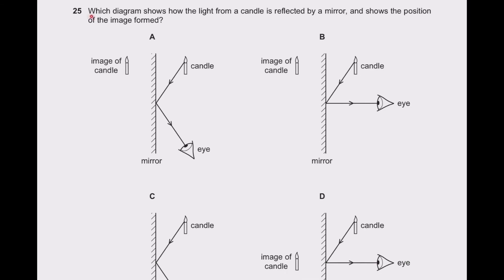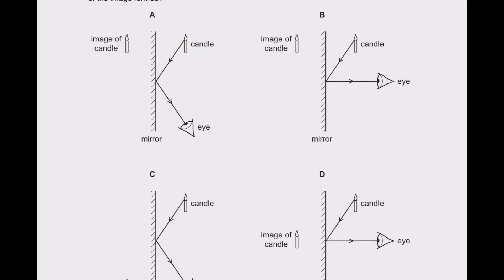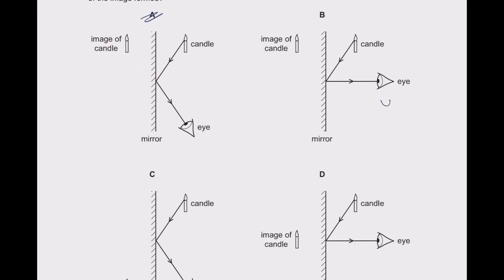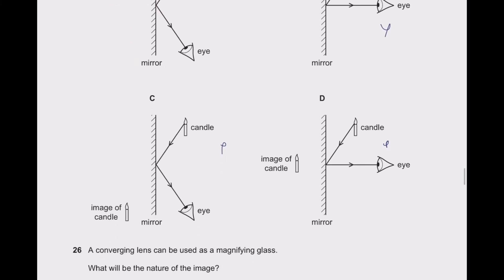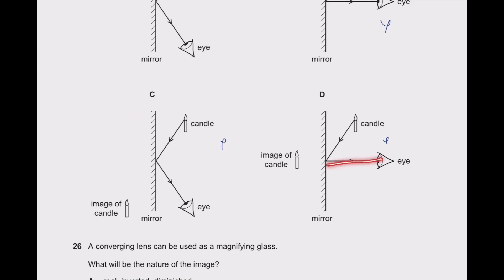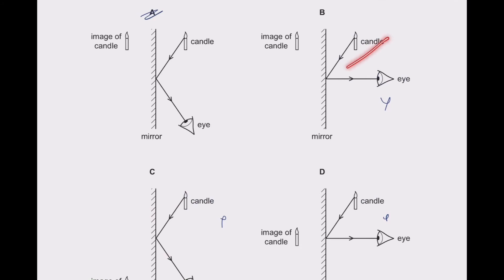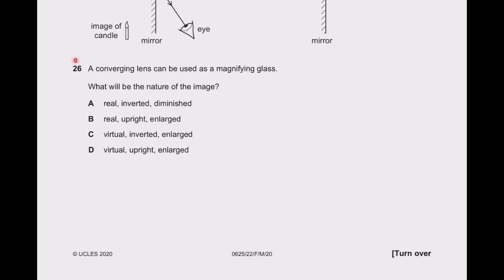Question 25: which diagram shows how light from a candle is reflected by a mirror to form an image? Light gets reflected from the mirror and reaches our eyes, and the observer seems to see an image inside the mirror. Option A is correct — the rest are incorrect because they do not obey the laws of reflection or the image is not forming correctly.